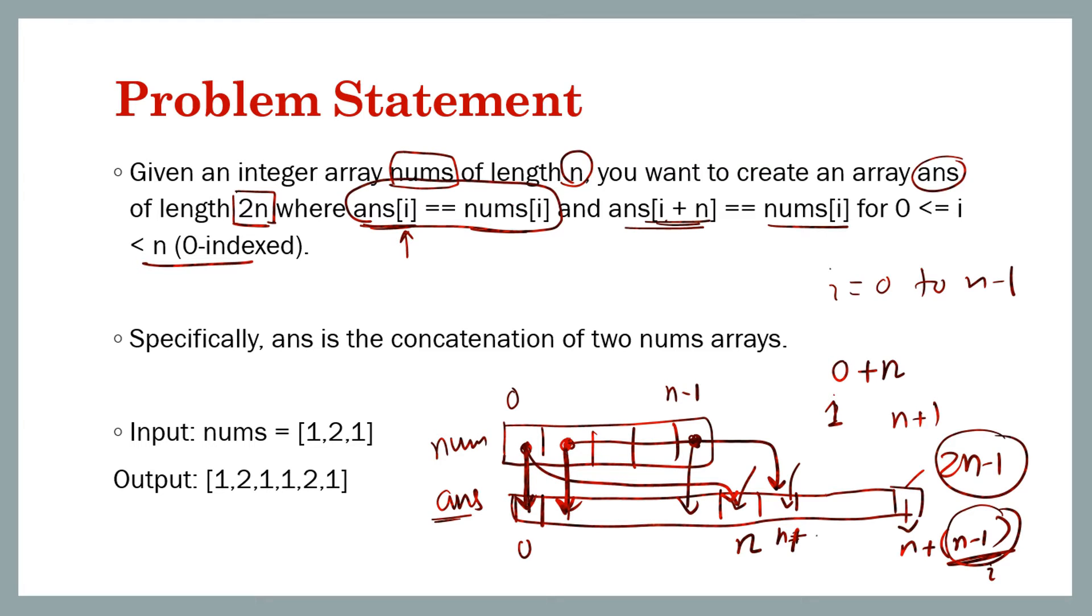So in essence, what is the result? You can implement it the way given here, or if you see the result it's the same thing repeated twice. If you divide the result into two halves, the first element of both halves are the same, second element of both halves are the same, and so on.